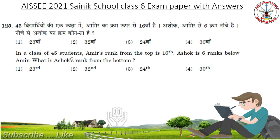In a class of 45 students, Amir's rank from the top is 60, Ashok is 6 ranks below Amir. What is Ashok's rank from the bottom? Answer is 24.